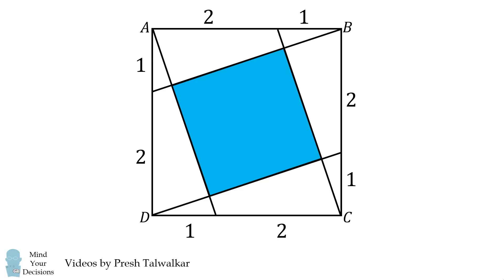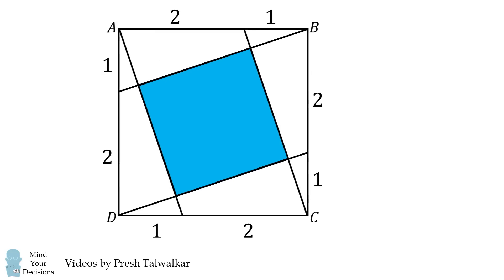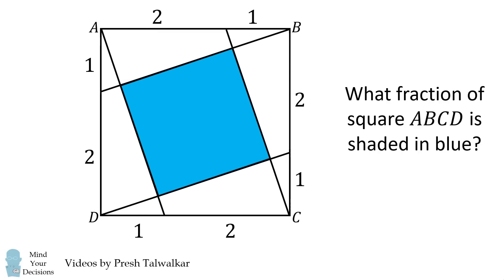The question is: what is the area of the blue square divided by the area of square ABCD? In other words, what fraction of the square ABCD is shaded in blue?